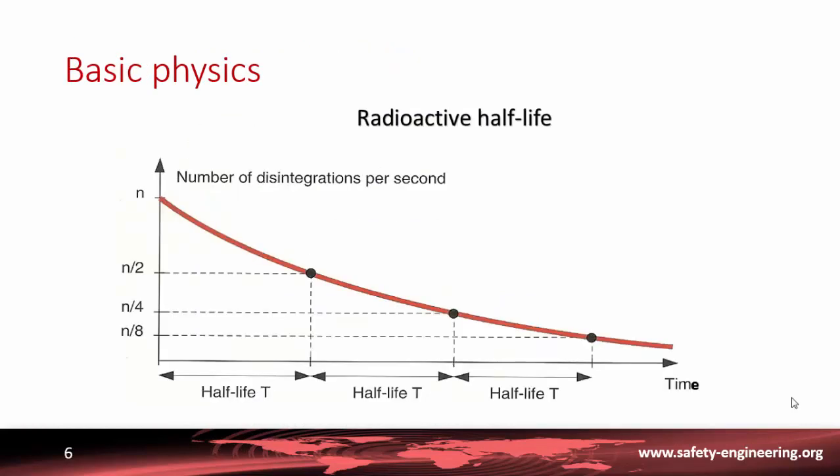Let's introduce now the concept of radioactive half-life. The natural radioactivity of unstable nuclei consists in their disintegration through radioactive radiation. If we consider a population of radioactive nuclei, we can observe a natural decrease with time in the population due to natural radioactivity. As we can see in this figure, there is a decrease by half of the number of nuclei after a period of time named the radioactive half-life.